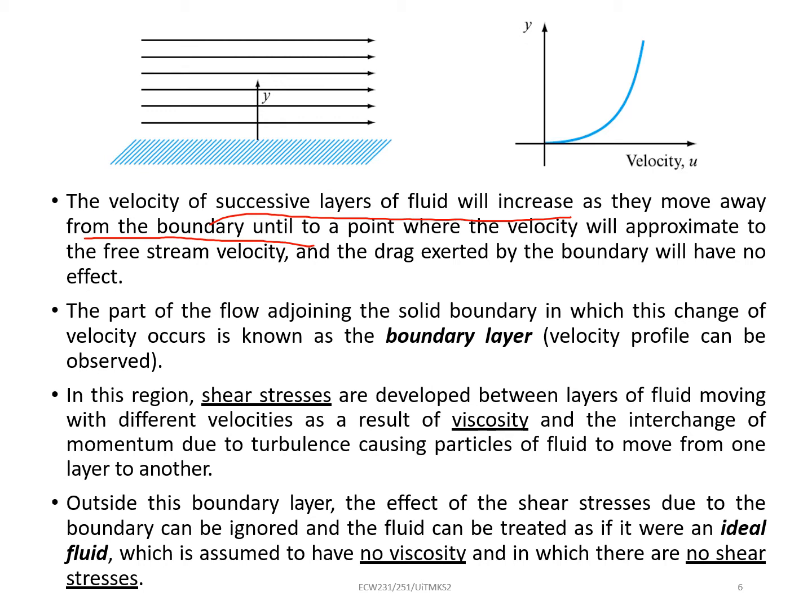And then the part of the flow adjoining the solid boundary in which this change of velocity occurs, we call it as boundary layer. When there is boundary layer, which is velocity profile can be observed. This is boundary layer. It can be the same wavelength, meaning the same distance, or different distance depending on velocity. This layer we call it as boundary layer.